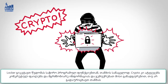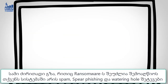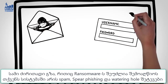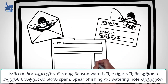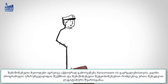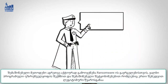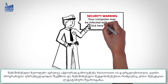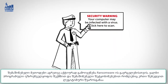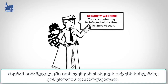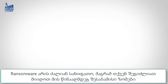The three main ways ransomware can infect your computer is through spam, spear phishing, and watering hole attacks. Scareware tactics are also used to spread ransomware by creating fake software or messages purporting to be from a legitimate source, but actually demand that you pay a ransom to regain control of your computer.